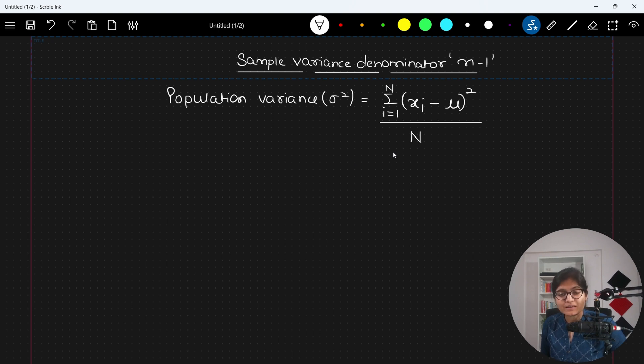where this capital N indicates again the number of observations that you have. So this is the simple formula that we have when we are trying to calculate the value of population variance. Summation of xi minus mu whole square divided by capital N.